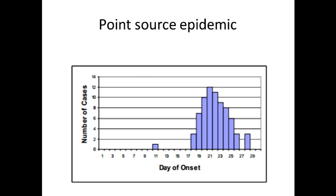The first pattern is known as a point source epidemic curve. In this one, you will generally have a common source like contaminated food or an infected food handler, and all exposures tend to occur in a relatively brief period. For a point source epidemic, you will have a short incubation period.